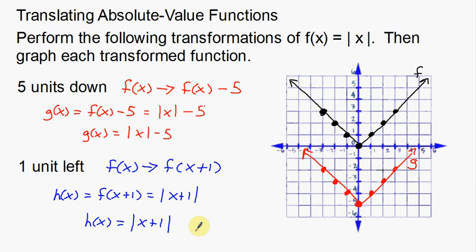Now I'm simply going to graph it. Graphing is a little bit easier — we just want to move all the points one to the left. So I take my old function and move everything one to the left. This blue one is my h function. You can see why we need to label our functions — notice how things are overlapping here, so we need good labels so we can read it.